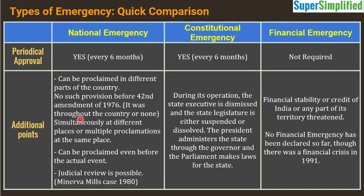There are some additional important points. National emergency can be proclaimed in different parts of the country — it does not have to cover the entire nation. This provision was brought in by the 42nd Amendment of 1976; before that, either emergency covered the whole country or nowhere. Additionally, national emergency can be proclaimed even before the actual event — you don't have to wait for war to start before declaring emergency.